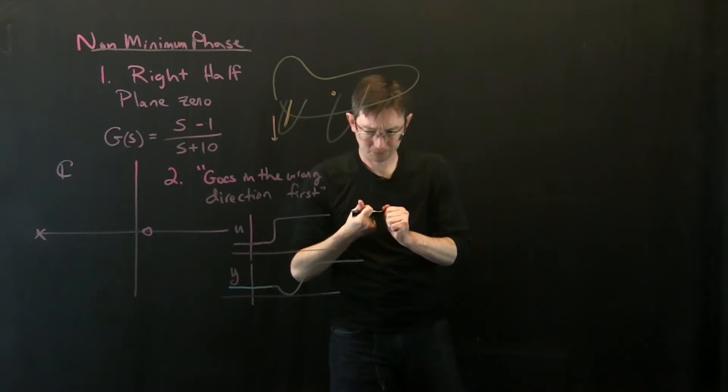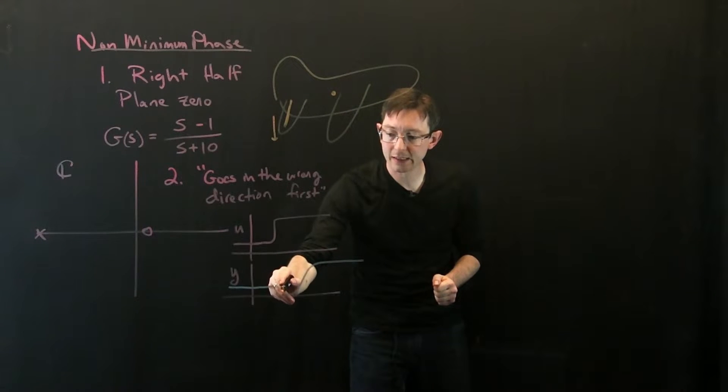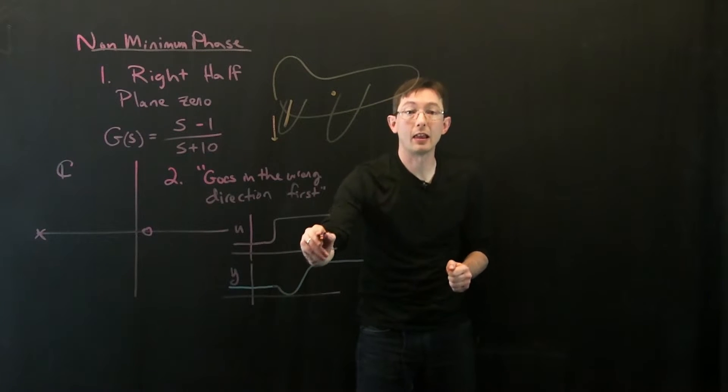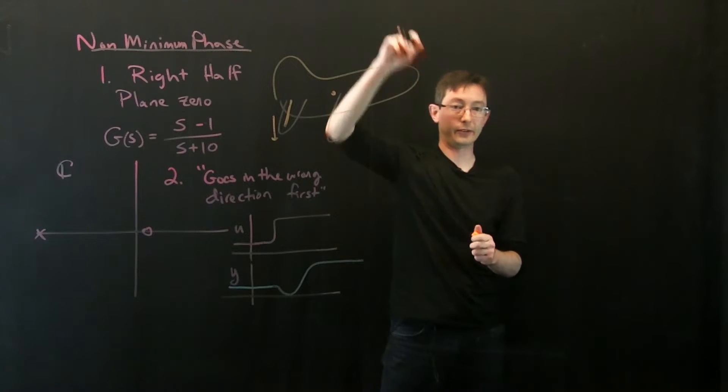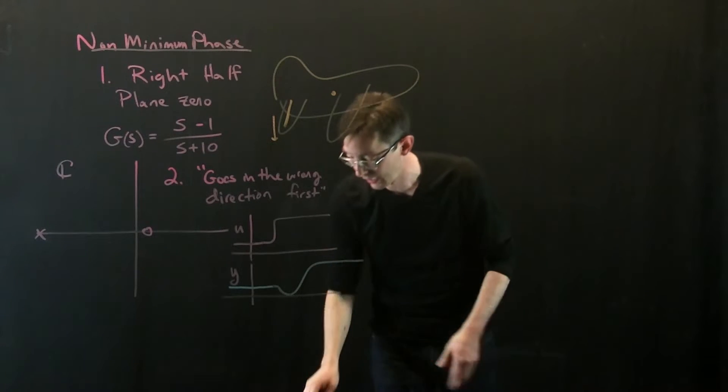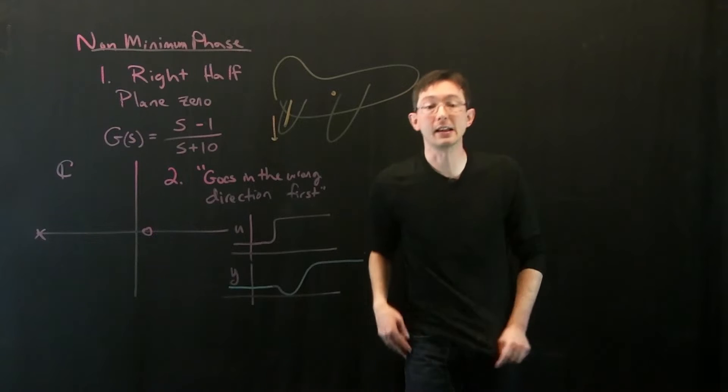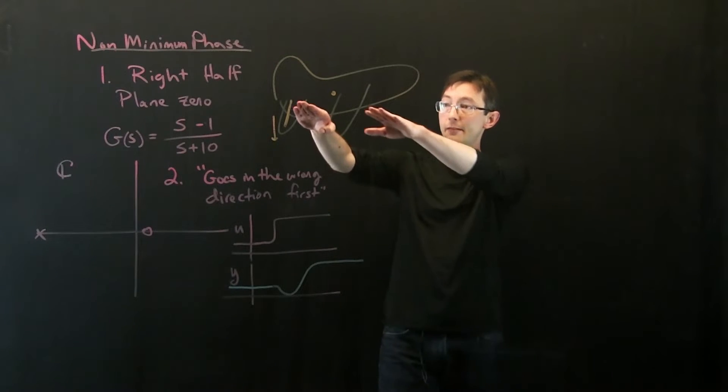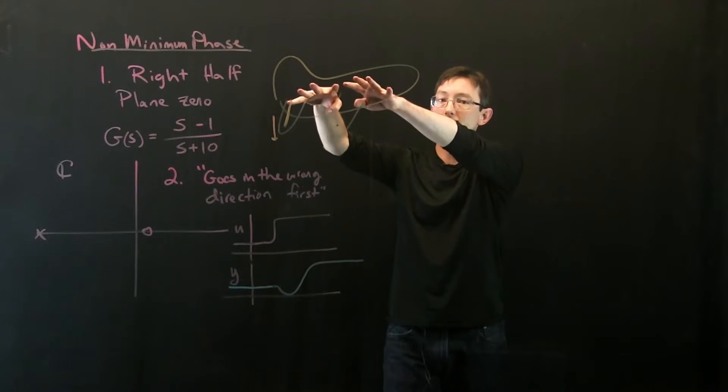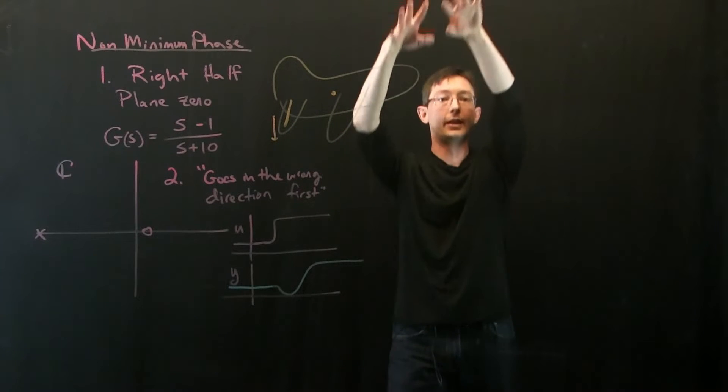So the center of mass actually dips before then it climbs because of the increased lift. So I think an airplane gaining altitude is a great example of a non-minimum phase system where you have to first go down a little bit before you can then go up.